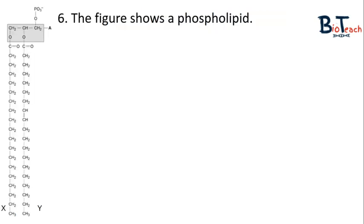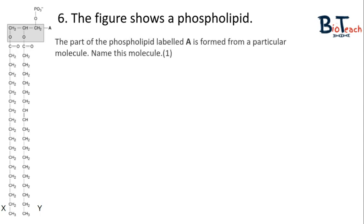Question number six starts off by giving you a figure of a phospholipid that's shown on the left of this particular slide. You've also got a box that's labelled A, and you've got the X and Y labels just at the bottom. The first part of the question asks you about naming box A, which molecule this particular labelled area is. We know that the phosphate group is at the top where you can see the PO3. So the second part of this particular phospholipid has to be the glycerol molecule.